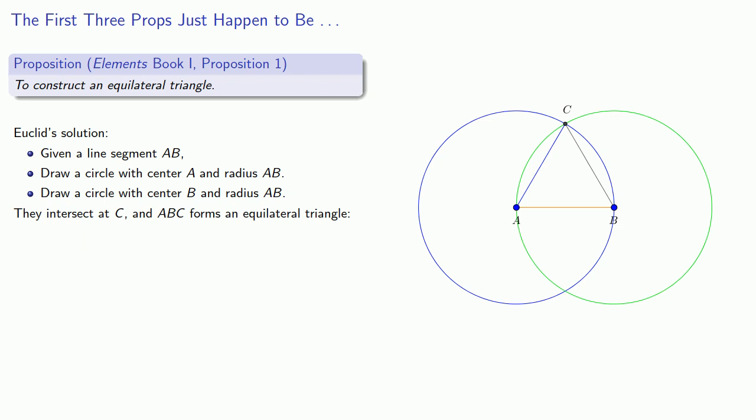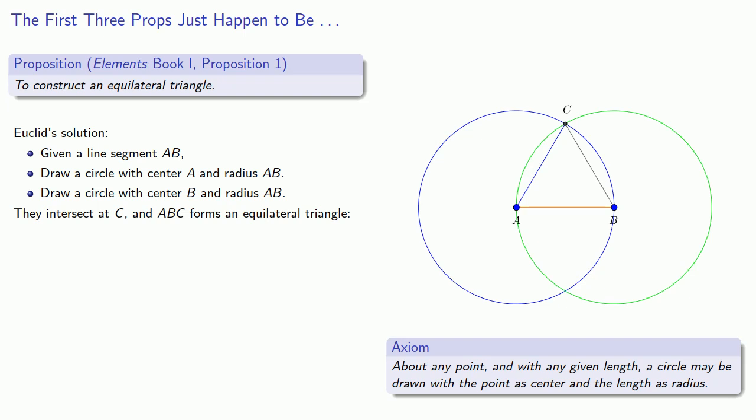So this is a construction. What makes it a proposition is two things. First of all, Euclid proves that you can do every single one of these steps. Let's take that apart. So we have our line segment, draw a circle with center A and radius AB. Well, that's the third axiom. About any point and with any given length, a circle may be drawn with the point as center and the length as radius. So these circles exist.